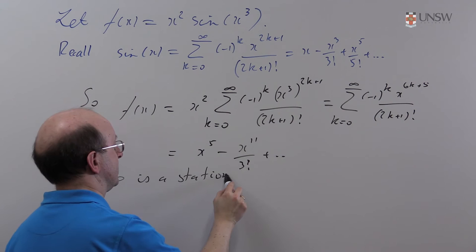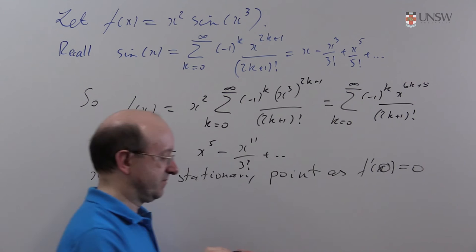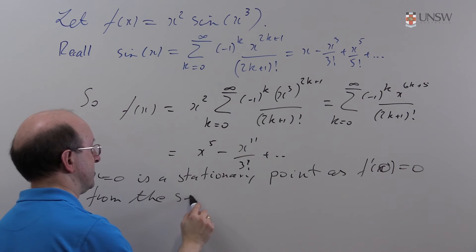x=0 is a stationary point as f'(0) = 0 from the series.